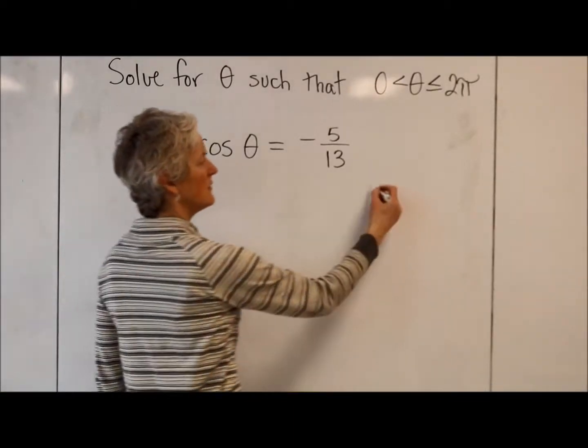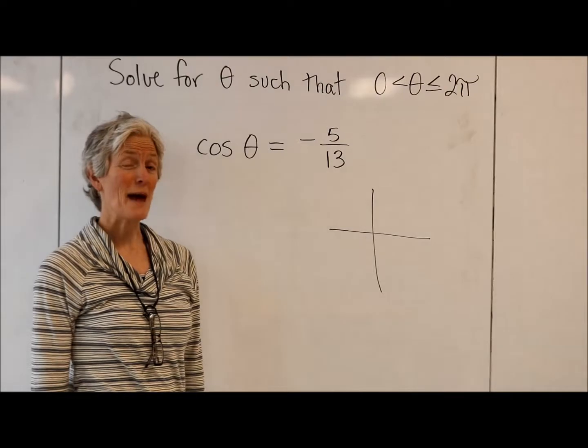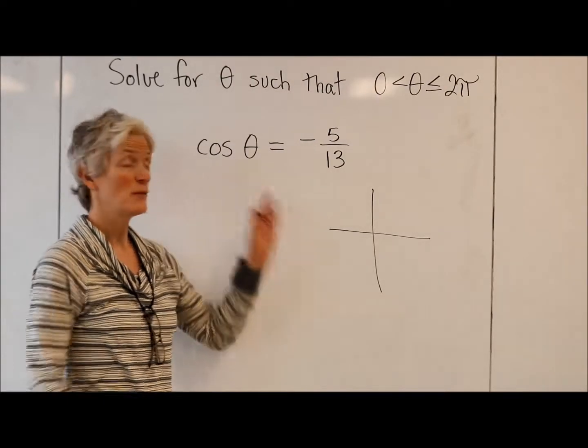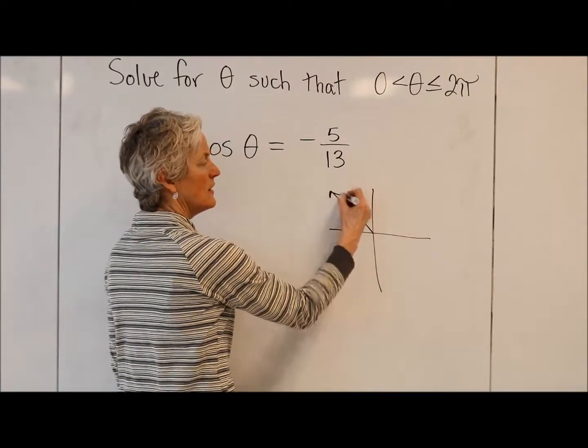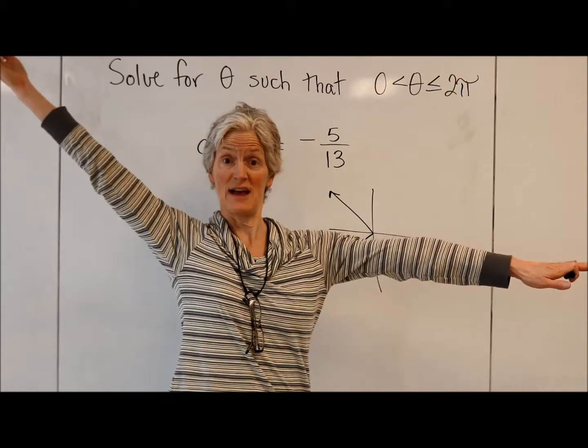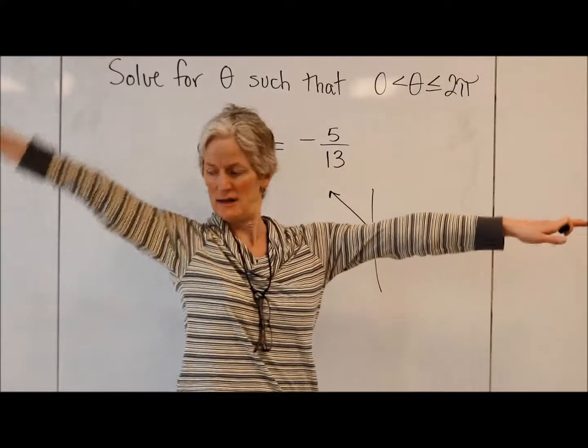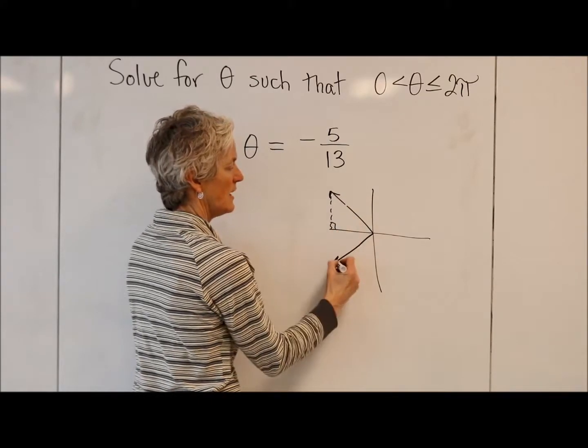Cosine, I know, is associated with my x. So cosine is negative when my x is negative. So that is my second quadrant and my third quadrant. So I'm rotating and terminating in the second quadrant or rotating and terminating in the third quadrant. I'm going to make my little reference triangles.